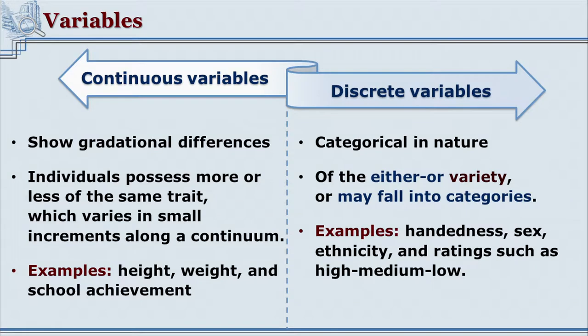It also helps especially in experimental researches where the impact of one variable on the other is being studied, along with how other variables have their own impact. Thus, variables are very crucial and the researcher's clarity on variables is essential right from the beginning. The variables are classified into various types, and the basis of this classification could be different.